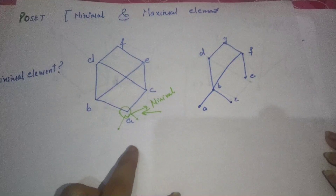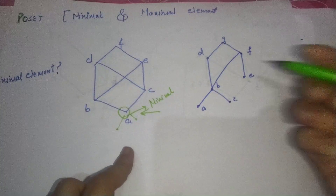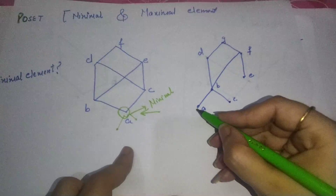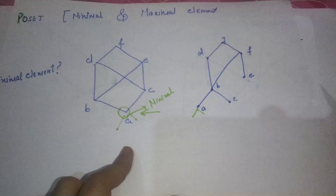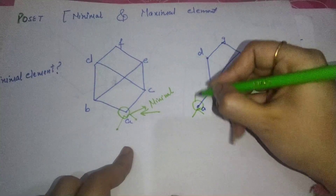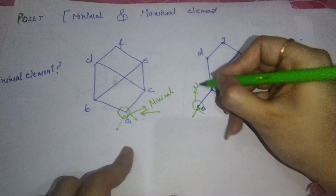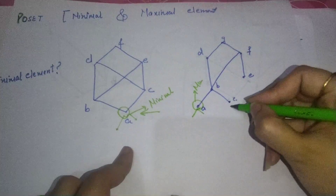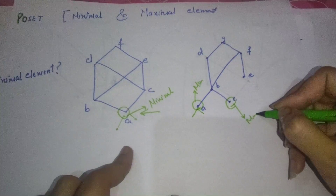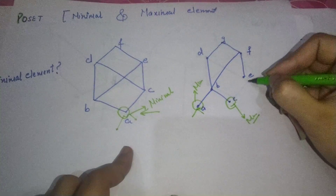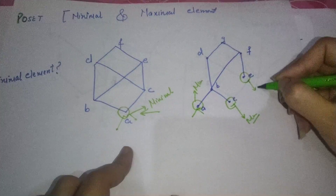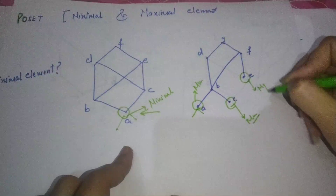Now let us look at the next example. A has no relation behind it, so it is a minimal element. C has no relation behind it, so it is a minimal element. E has no relation behind it, so it is a minimal element.